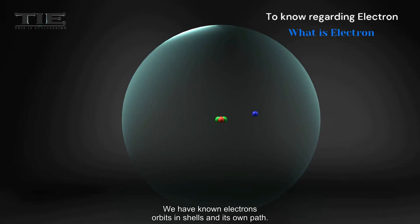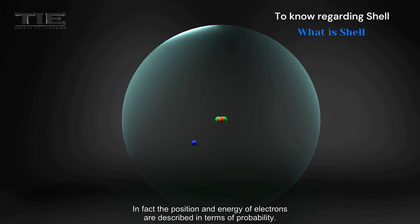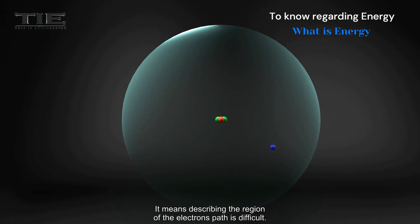We have known electrons orbit in shells and its own path. In fact, the position and energy of electrons are described in terms of probability. It means describing the region of the electron's path is difficult.